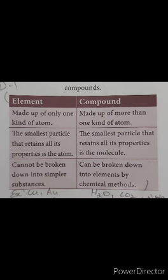Next comes the second classification: compounds. When two or more elements combine chemically, they form a new substance called a compound. For example, cane sugar is made from three elements — carbon, hydrogen, and oxygen.